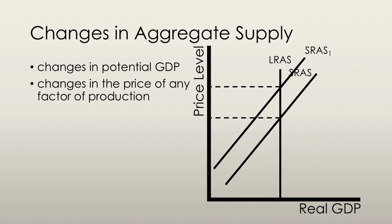Short-run aggregate supply will also change in response to a change in the money wage rate. When the money wage rate changes, or any other factor of production — for example, the cost of oil or raw materials — the long-run aggregate supply remains unchanged; that curve does not shift. An increase in the money wage rate, for example, shifts the short-run aggregate supply curve to the left. This increases firms' costs, so the quantity supplied at each price level will decrease for all firms.